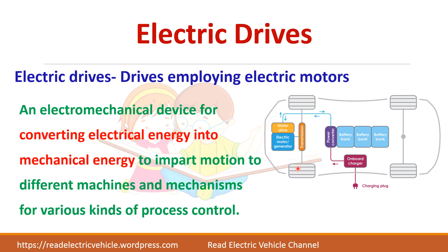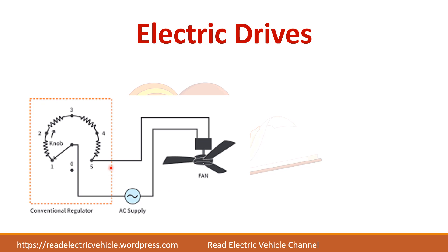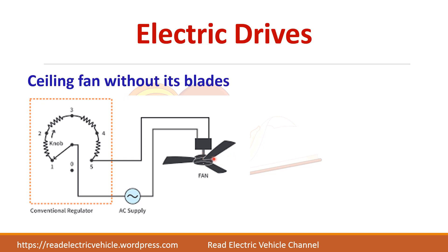In the home, washing machines and air conditioners are all electric drives. A ceiling fan is also an electric drive — the control unit controls the operation of the fan, and the blades are controlled by the motor. The ceiling fan without its blades is called the electric drive; if you include the blades as well, the whole system is called the electric drive system.